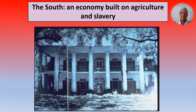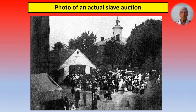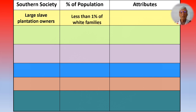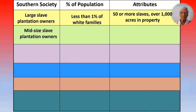We have this stereotypical view of the South with a plantation house, but the South was an economy built on agriculture and slavery, and they didn't all live in houses like that. Here is a photo of an actual slave auction — human beings being treated as property, bought and sold. Hard to imagine today, but that was the case. The society was not what we stereotypically think of. Those who had large slave plantations were less than 1% of white families, owning 50 or more slaves and over a thousand acres in property.